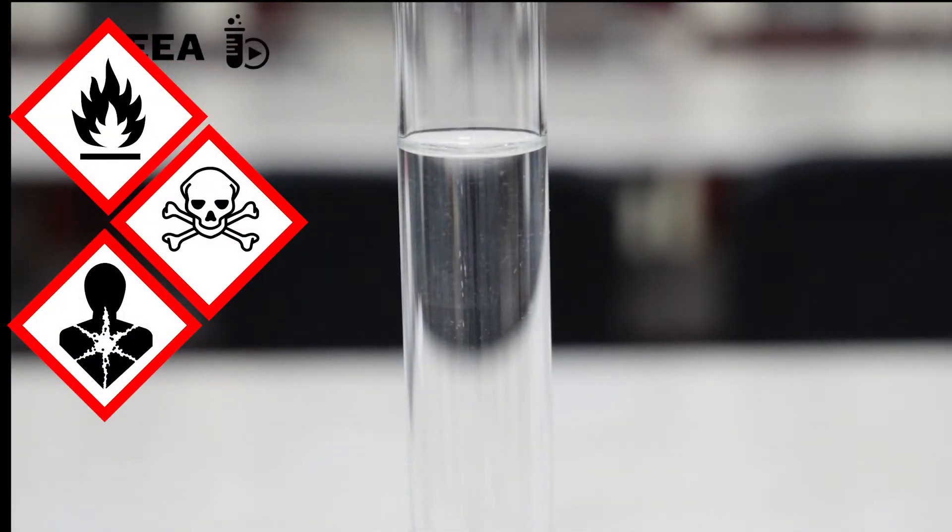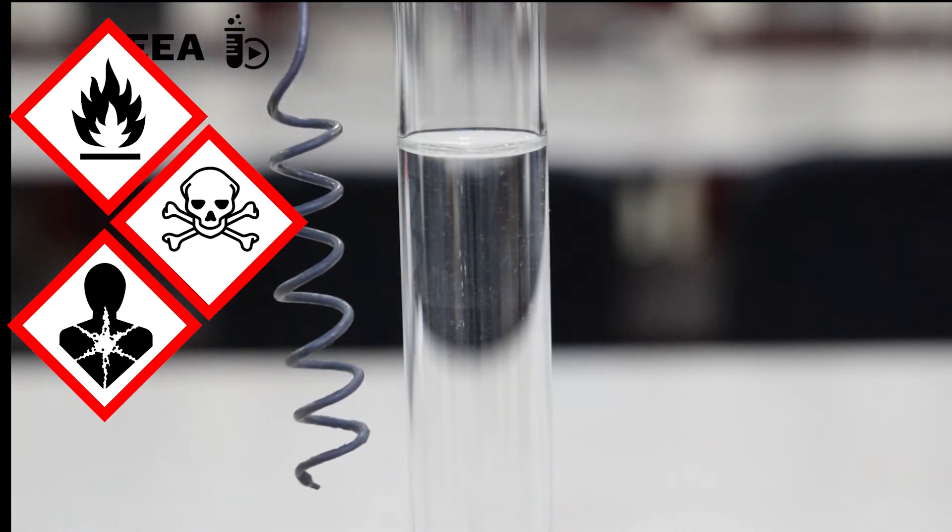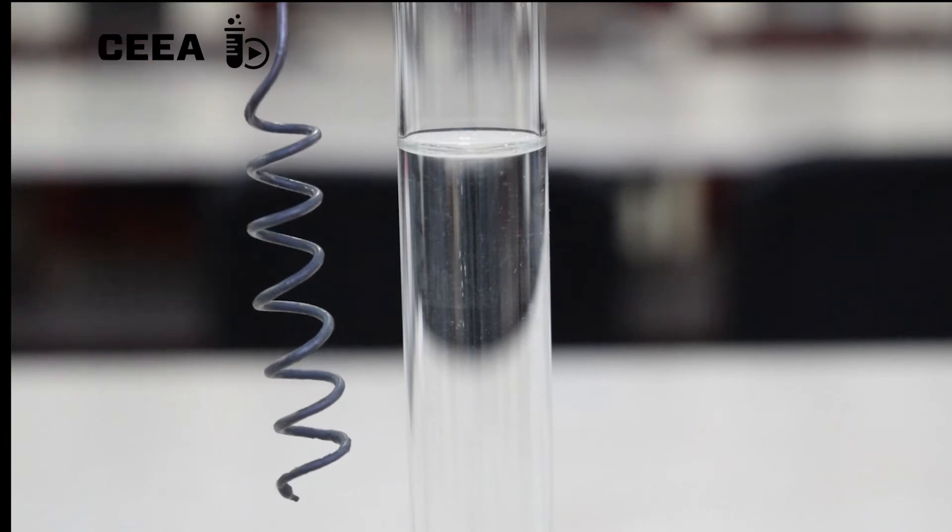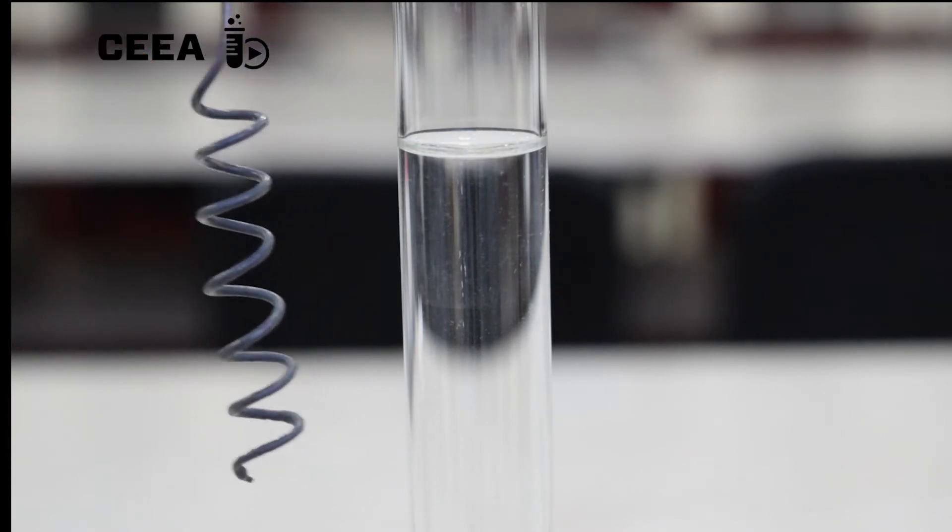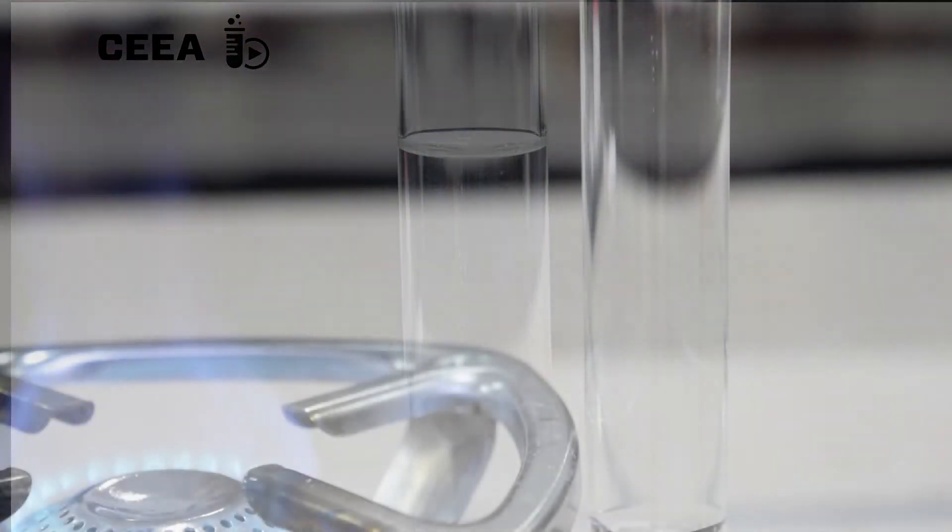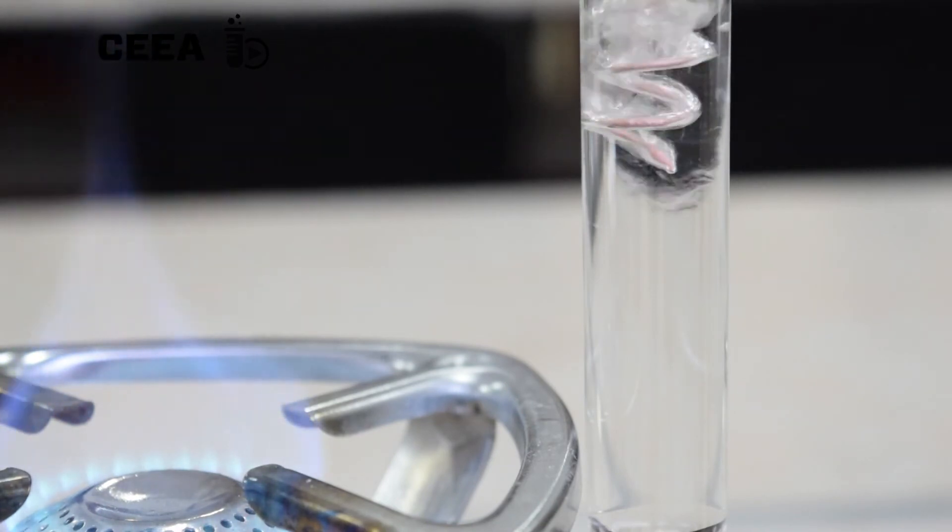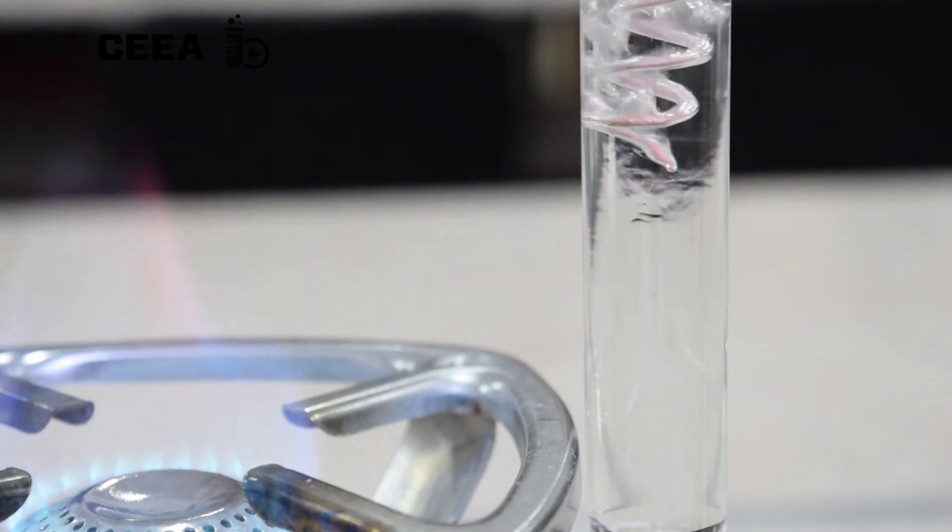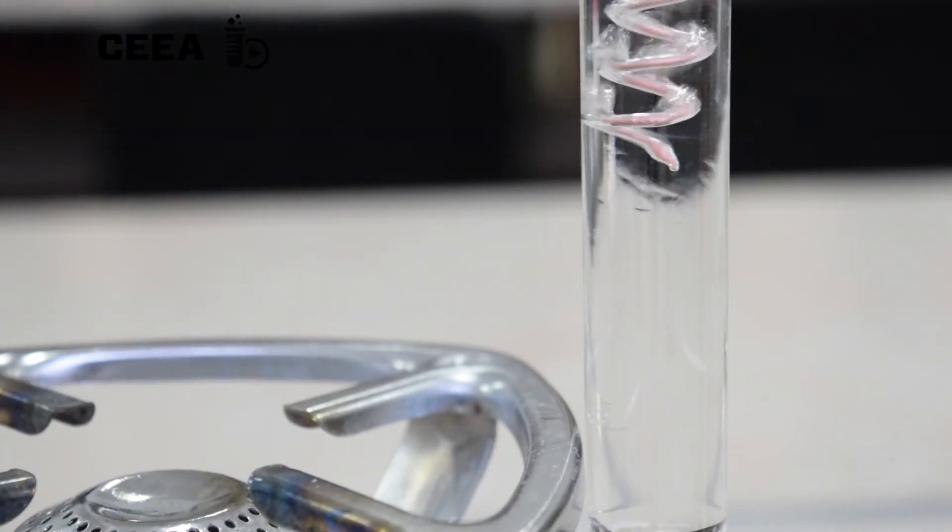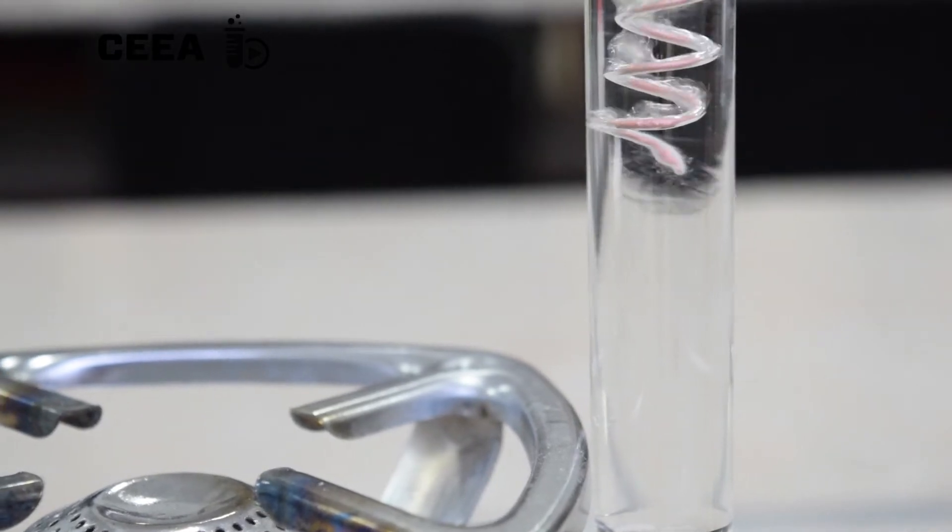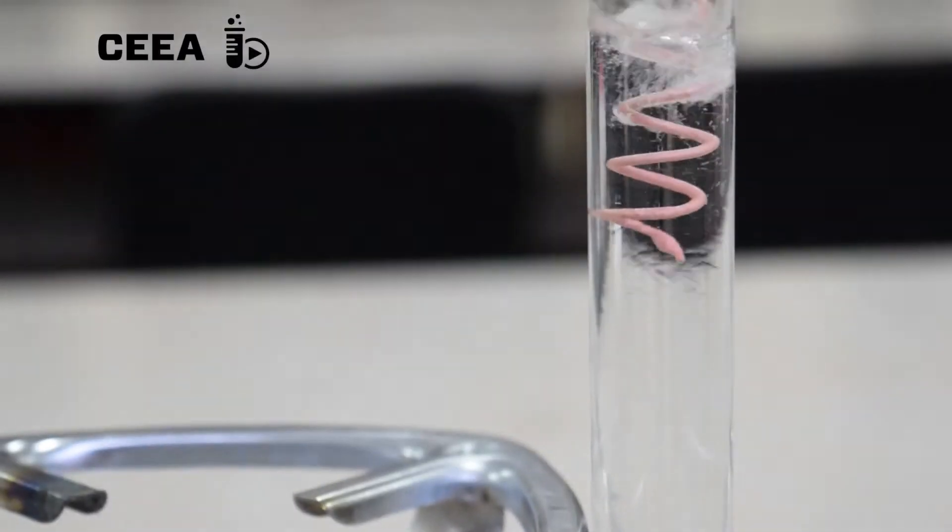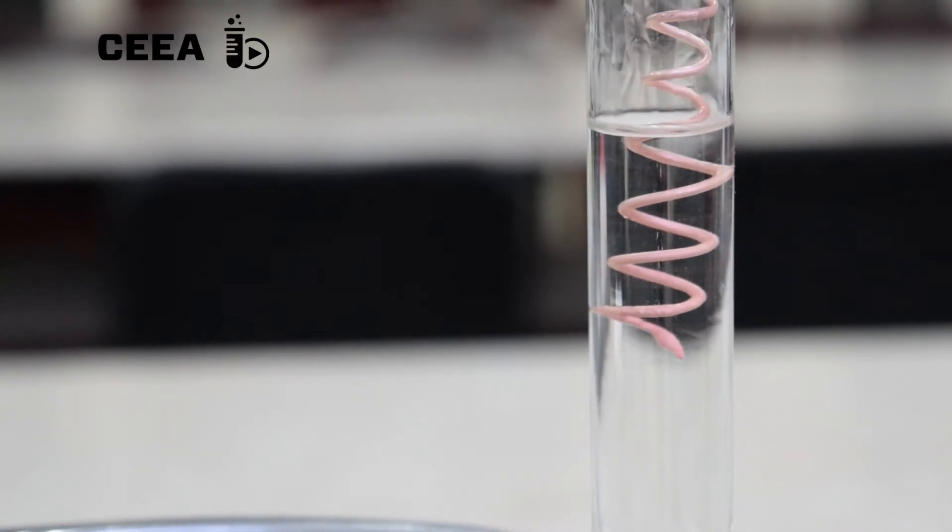When hot, this copper oxide can react with alcohols, like methanol, giving a beautiful layer of copper on the wire. This is due to the oxidizing capacity of the copper oxide, which oxidizes the alcohol and reduces itself to an elemental layer of copper.